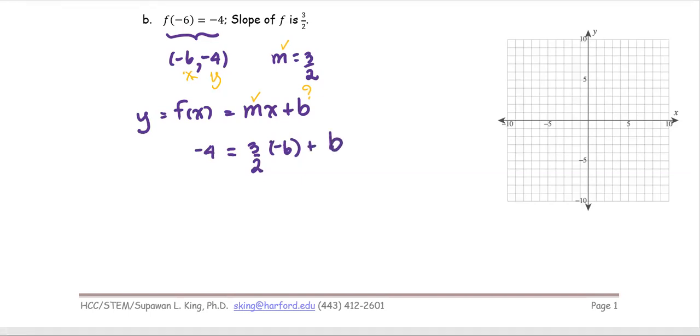We can reduce the 2 and -6 to be -3, and simplify to be -4 = -9 + b. So then the b value is -4 + 9, or positive 5.